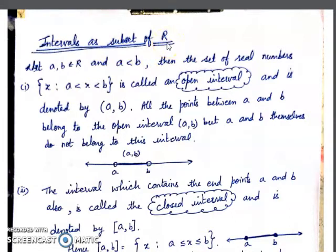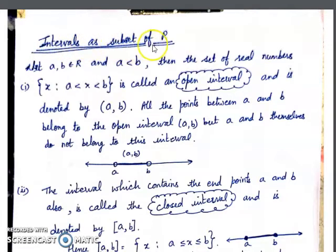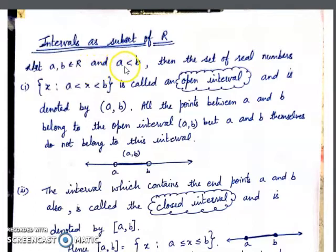In the last lecture, we studied about subsets. Now, a subset can also be represented in the form of an interval of real numbers. R means the set of real numbers. Consider A and B belonging to R, meaning A and B are two real numbers with the condition that A is less than B.